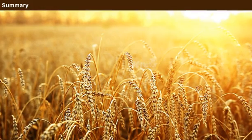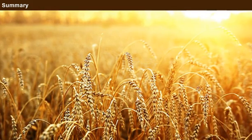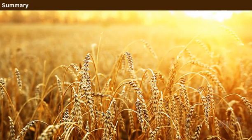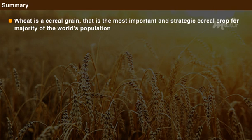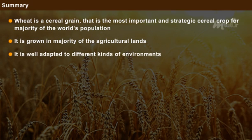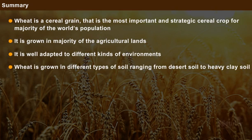Summary: That has been an interesting lesson in the study of wheat. Wheat is a cereal grain that is the most important and strategic cereal crop for the majority of the world's population. It is grown on more agricultural land than any other field crop worldwide and is well adapted to different kinds of environments. Wheat is grown in different types of soil, ranging from desert soil to heavy clay soil.